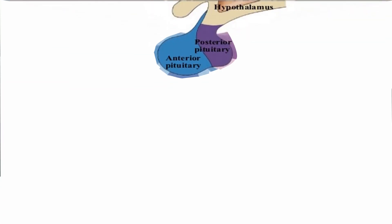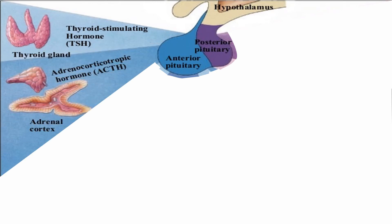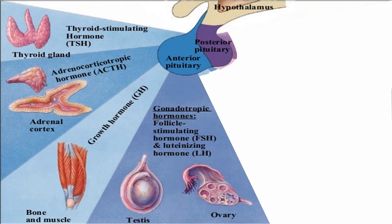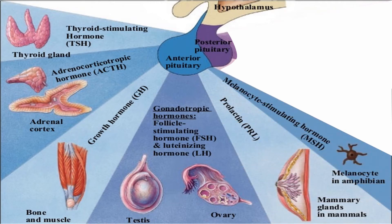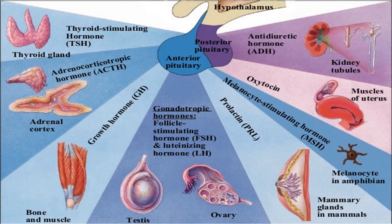Anterior pituitary hormones include thyroid stimulating hormone (TSH), adrenocorticotrophic hormone (ACTH), growth hormone (GH), gonadotrophic hormones FSH (follicle stimulating hormone) and LH (luteinizing hormone), prolactin, and melanocyte stimulating hormone. From the posterior pituitary, oxytocin and vasopressin (antidiuretic hormone) are released.